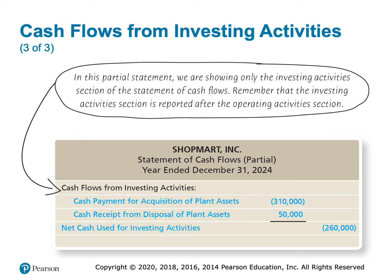The investing section is straightforward. We paid cash of $310,000 to purchase assets — that goes in parentheses as a negative number. We sold assets for $50,000, so that's a positive $50,000 because that's cash received. If you spent money, it's a negative number; if cash came in, it's a positive number. Note that this $50,000 already includes the $10,000 gain — no special adjustment is needed.